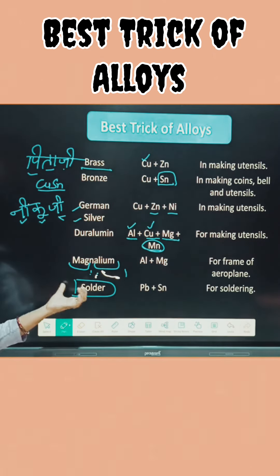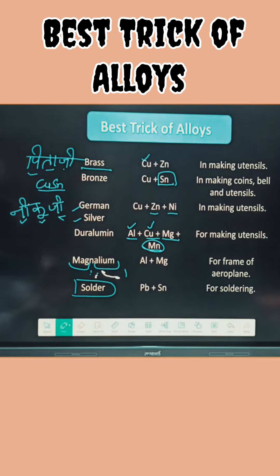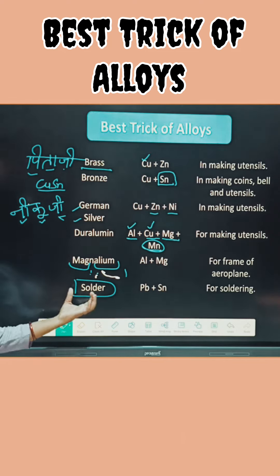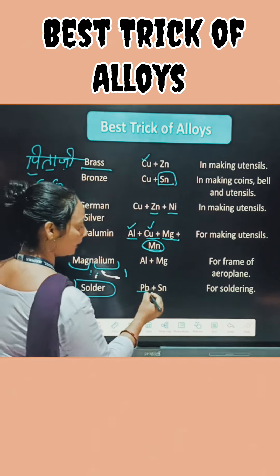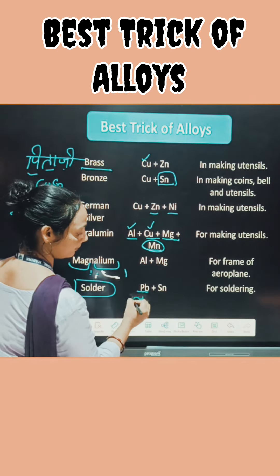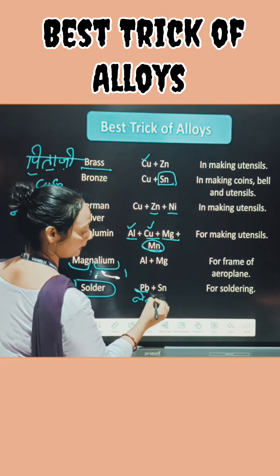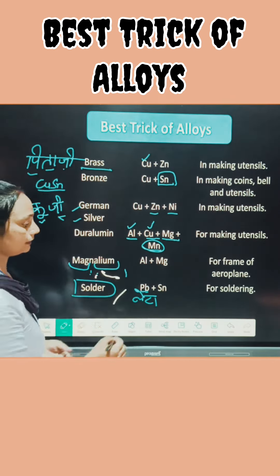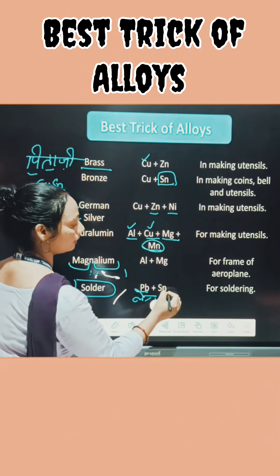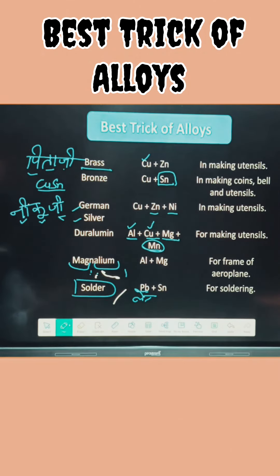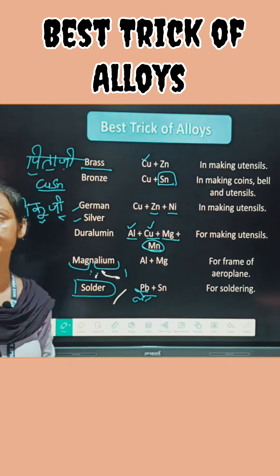The next term is solder. If you use the word 'soldier' — soldiers do the fighting only by 'leta' — so solder means 'leta': LE for lead and TA for tin. By using all these tricks, we can very easily learn all the compositions of alloys. Thank you.